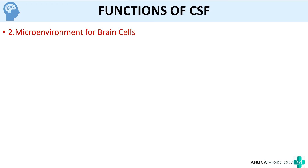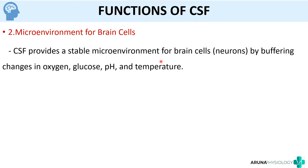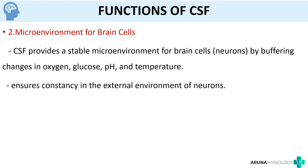The next function of CSF is that it produces a stable micro-environment for brain cells. Since neurons in the brain are highly sensitive, CSF buffers any changes in oxygen, glucose, pH, or temperature, helping to ensure constancy of the external environment of the neurons.